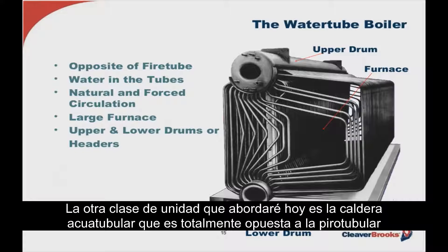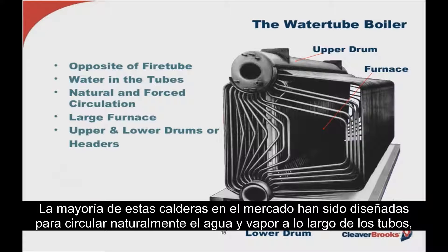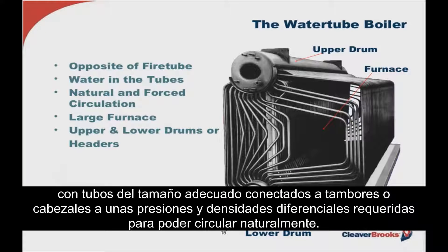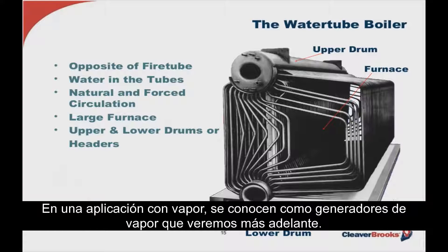The next major design category is the water tube, which is just the opposite from the fire tube: the water is in the tubes, and the fire and hot gases surround them. Many water tube borders today have been designed to naturally circulate the water-steam combination through the tubes, utilizing properly sized tubes connected to drums or headers to provide the pressure density differentials required for natural circulation. However, there are other water tube designs which require forced circulation, incorporating their own pump — in a steam application, often referred to as steam generators.